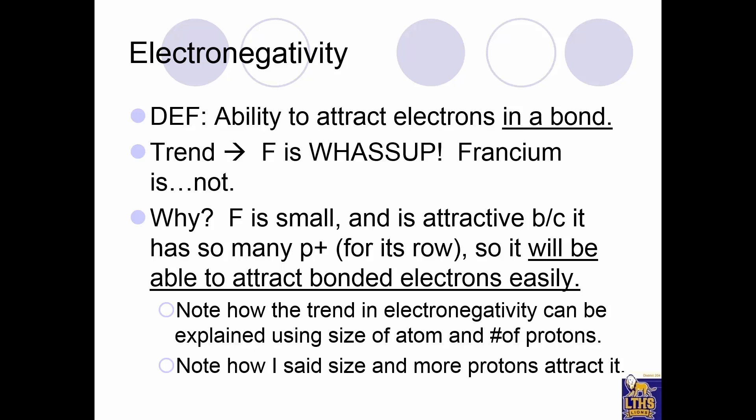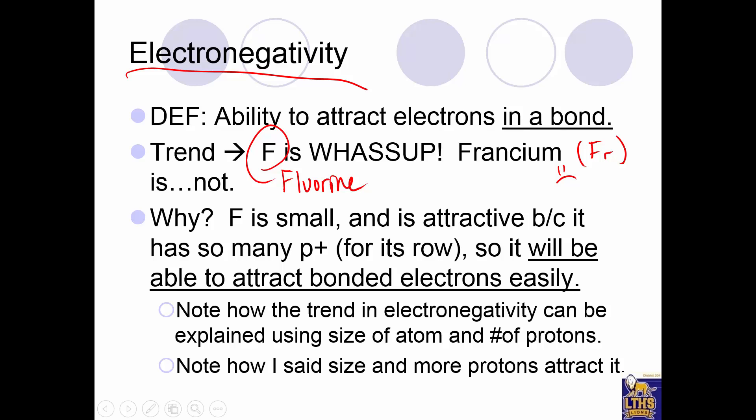So atomic radius: bigger going down, smaller going across. What about electronegativity? Electronegativity is the ability to attract electrons when elements are making a bond — the bond part is important. Fluorine has the highest electronegativity; francium has the lowest. Fluorine is small and attractive because it has so many protons in its nucleus for its row, so bonded electrons will be closer to its nucleus.